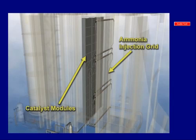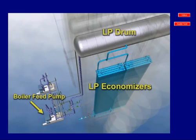Each HRSG includes a Selective Catalytic Reduction, or SCR, system. The SCR system, which is located in HRSG boxes 3 and 4, is designed to reduce nitrogen oxide emissions from the HRSG stack. To review an animated video of the HRSG's design, click on the Video button.